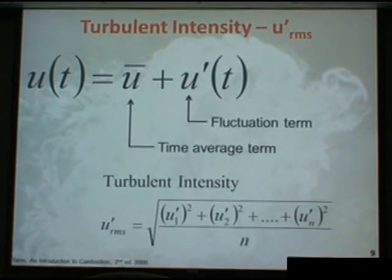And then we can define the turbulent intensity as the root mean square of the fluctuating term. So that's fairly straightforward, a simple statistical calculation, but we need to define it because we're going to talk about it later.